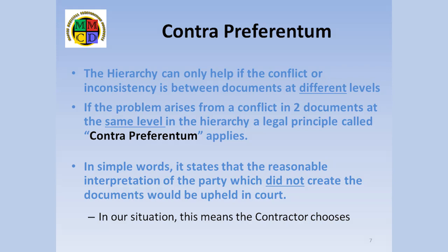But the document hierarchy cannot solve all conflict problems on its own. It only helps when the conflicting information occurs in documents at different levels in the hierarchy. When the conflict occurs in documents at the same level, a legal principle known as contra preferentum applies. This principle sets out that the party which did not draft the documents gets to have their reasonable interpretation upheld. What this means in a construction scenario is the contractor gets to choose which of the two conflicting instructions to follow.